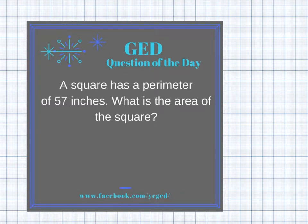It's GED question of the day, and look at this — we've got another word problem. It says a square has a perimeter of 57 inches. What is the area of the square?